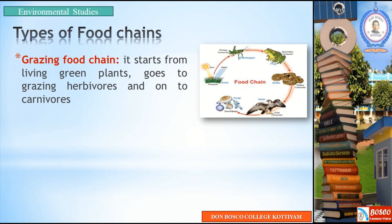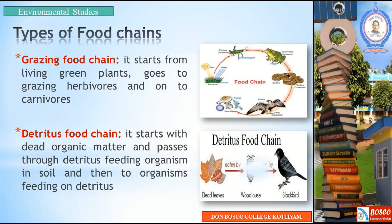The second type is the detritus food chain. It starts with dead organic matter and passes through detritus-feeding organisms in soil. Dead leaves provide energy to insects, which are then consumed by birds. So this food chain is called the detritus food chain. The two types of food chain are the grazing food chain, which starts from green plants, and the detritus food chain, which starts from dead organic matter.